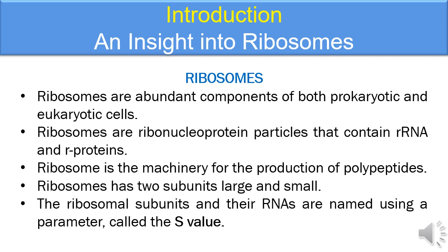Ribosomes have two subunits, one large subunit and one small subunit, and the two subunits come together to form a complete ribosome. The ribosomal subunits and their RNAs are named using a parameter called the S-value, where S stands for Svedberg's unit.